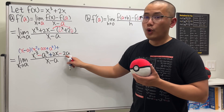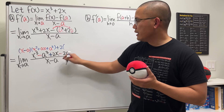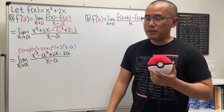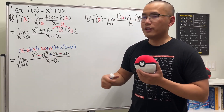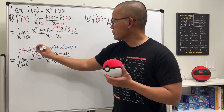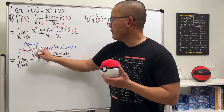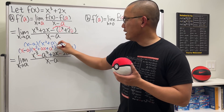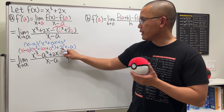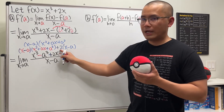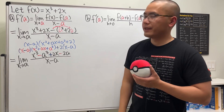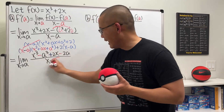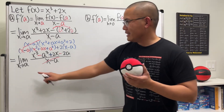For the second group, we maintain the plus and factor out a 2, giving 2(x − a). Now we can see that both groups share the factor (x − a), so we factor it out entirely. Putting it all together we get (x − a) times (x² + ax + a² + 2), all divided by (x − a). This is the moment we've been waiting for — cancel cancel! The (x − a) factors cancel.